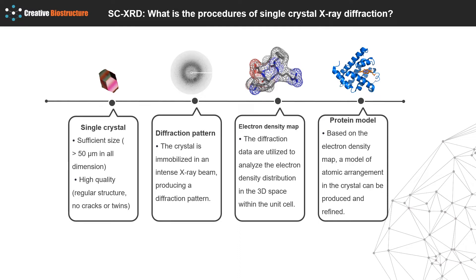Obtaining single crystals of high quality is the limiting step to solve a structure with this method. After obtaining a single crystal, a diffraction experiment is required. The crystal is immobilized in an intense X-ray beam, producing a diffraction pattern recorded as diffraction data, including angle and intensity of the diffracted X-rays. As the crystal is gradually rotated, previous reflections disappear and new reflections emerge. Subsequently, diffraction data are combined with structural analysis and data fitting to analyze the electron density distribution in three-dimensional space within the unit cell. Based on the electron density map, a model of atomic arrangement in the crystal can be produced and refined.